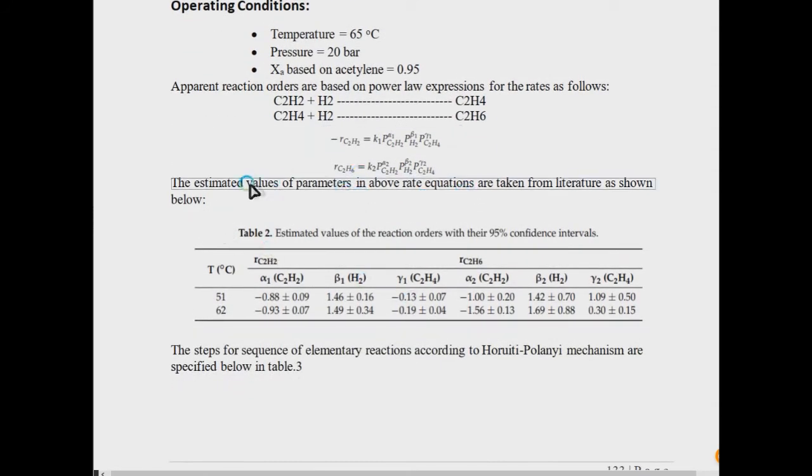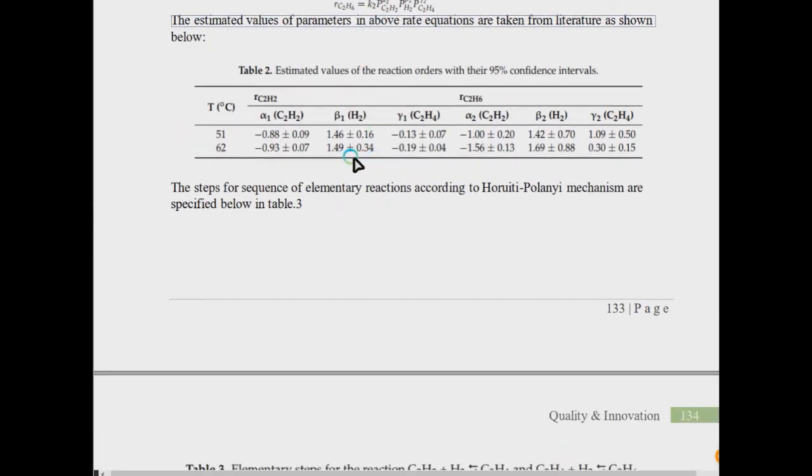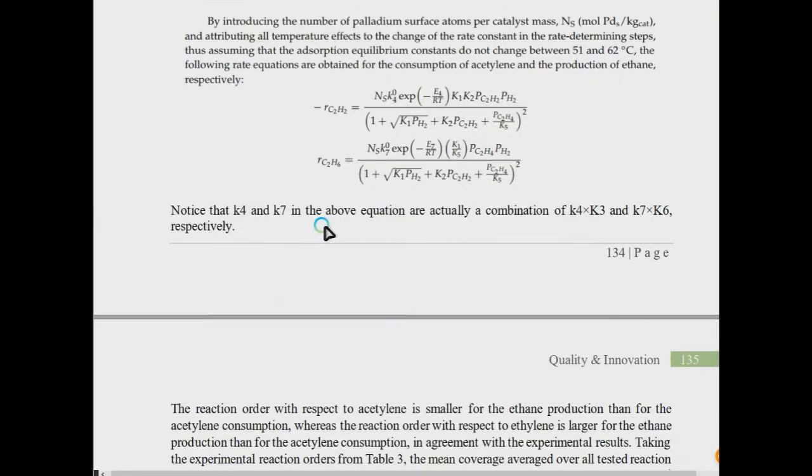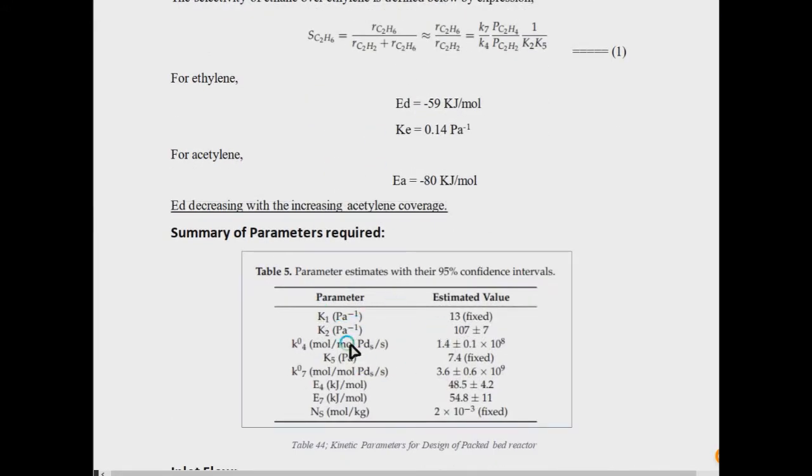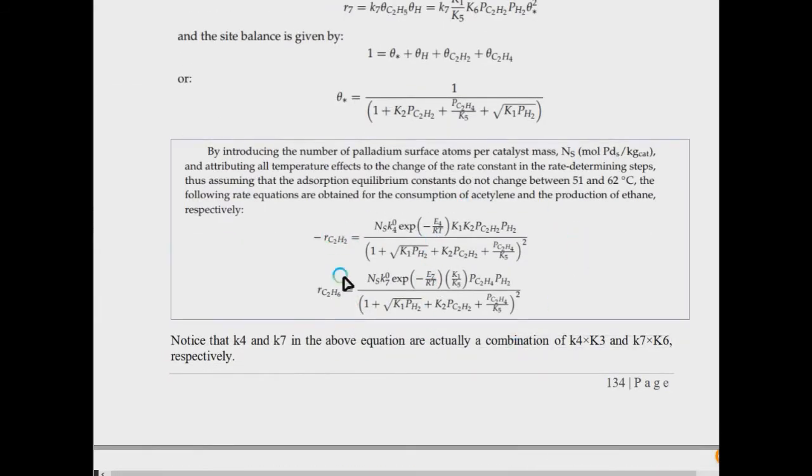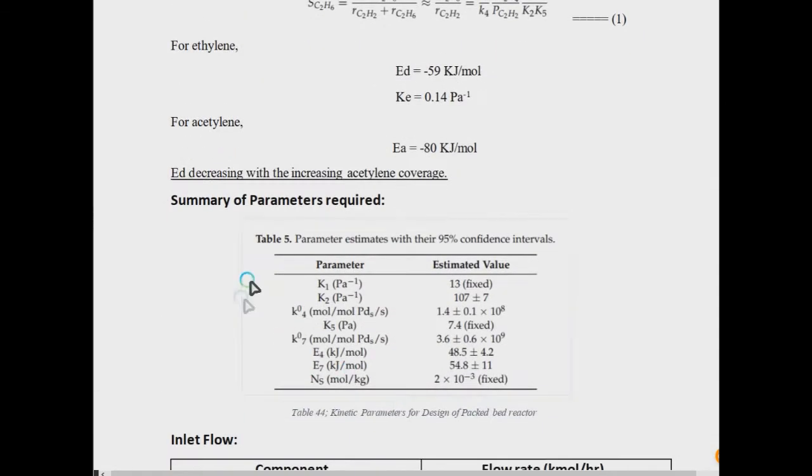The next step will be collection of your kinetic parameters. In this case we have kinetic parameters. These two are my rate equations for both reactions: this is side reaction and this is the main reaction. All the kinetic parameters are given in this summary.